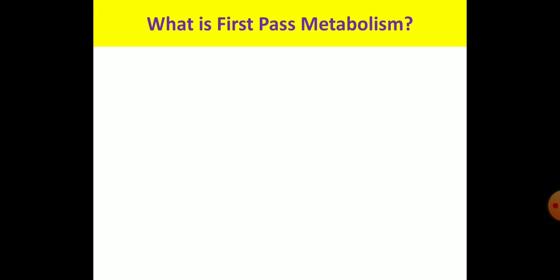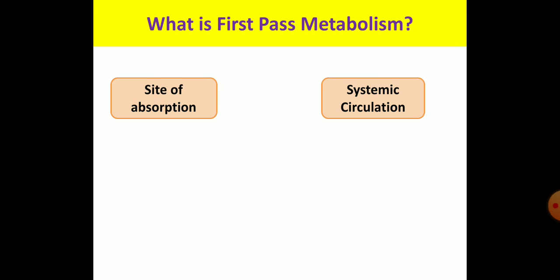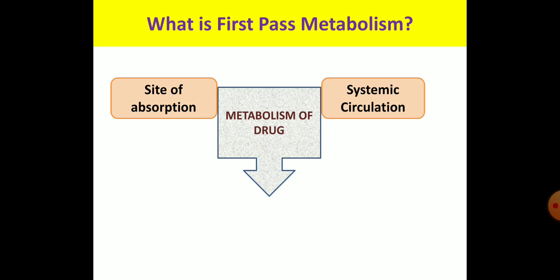What is first-pass metabolism? As the name suggests, it is the metabolism of the drug during its first passage. Once the drug is absorbed, it reaches into the systemic circulation and then to the target site to produce its action. If a drug is metabolized between its site of absorption and entry into the systemic circulation, that type of metabolism is known as first-pass metabolism.